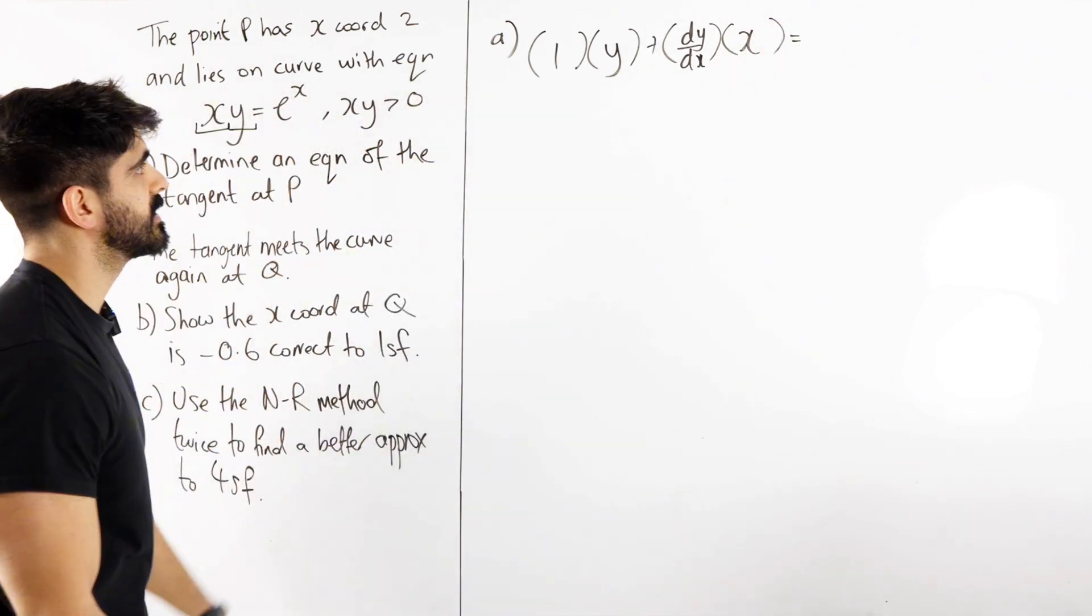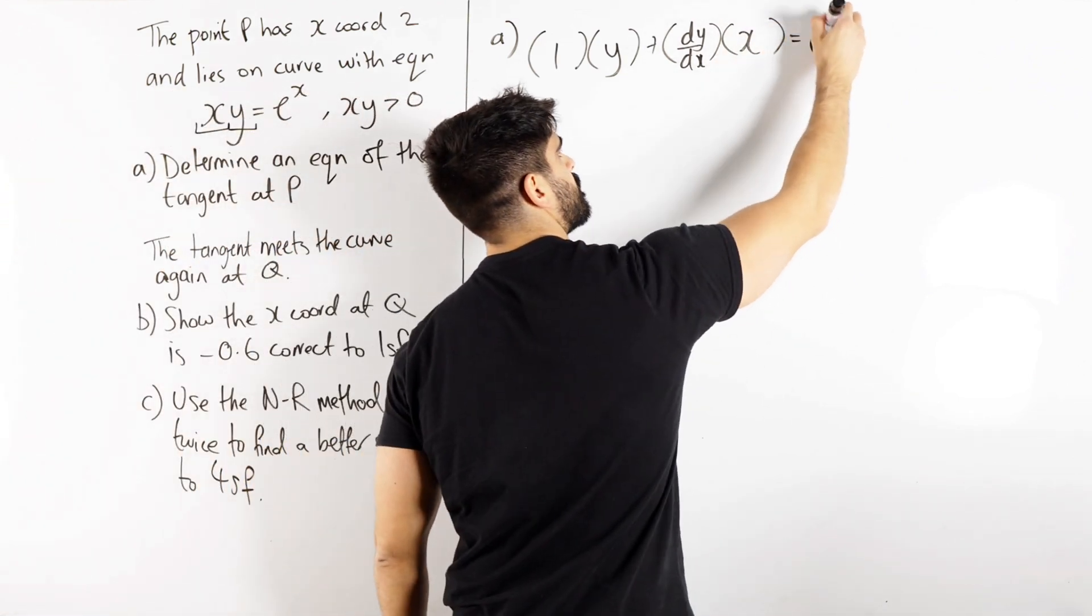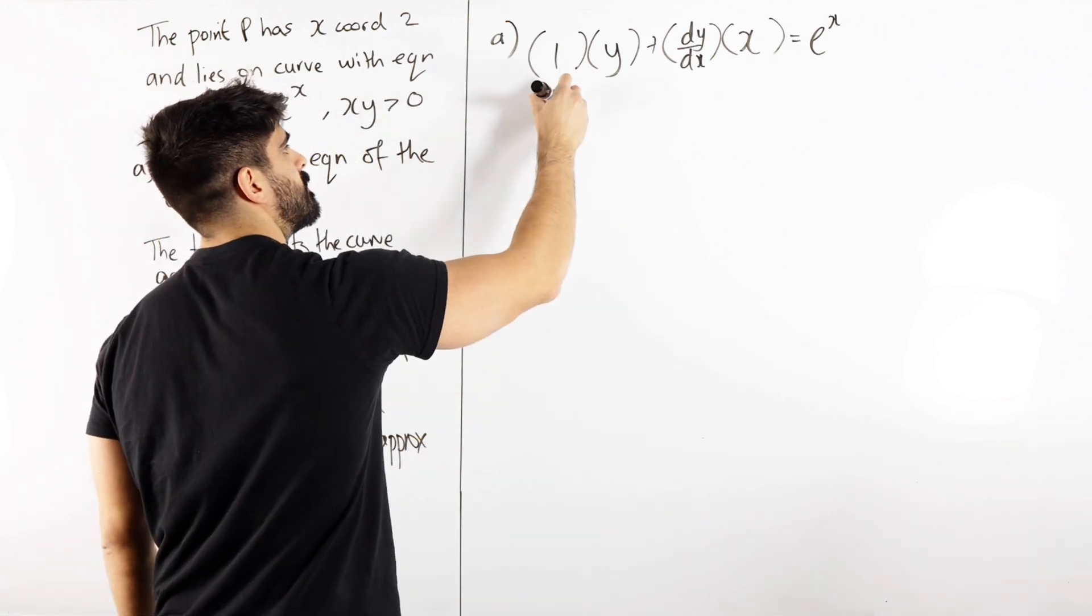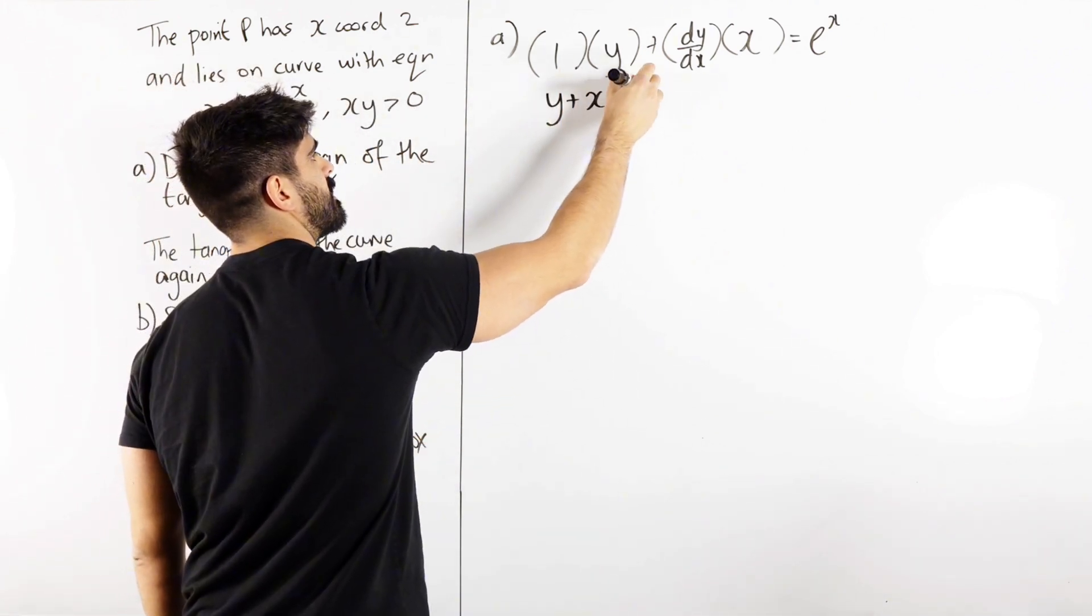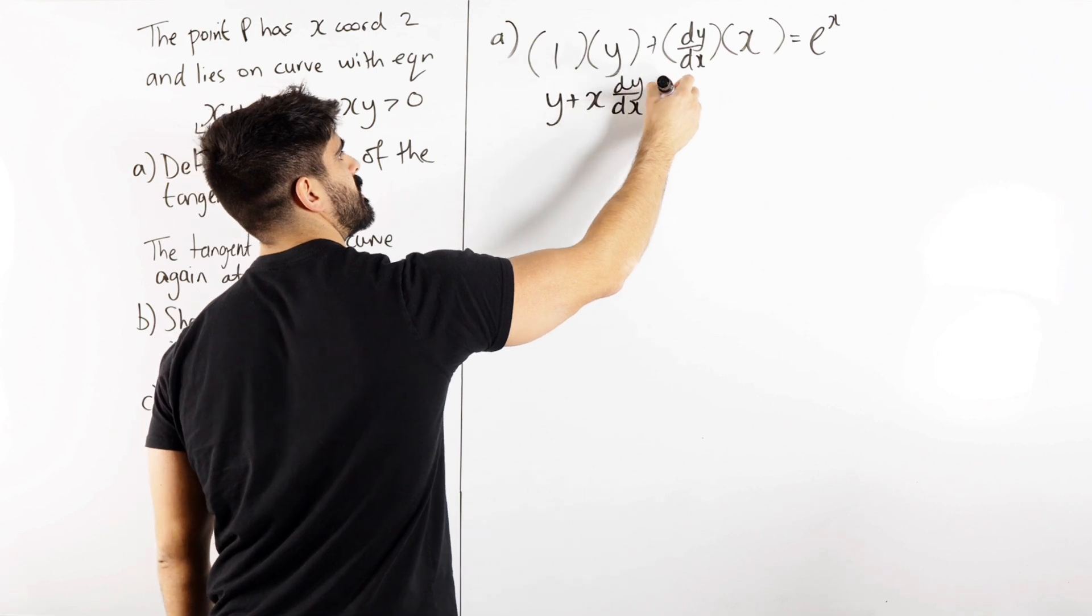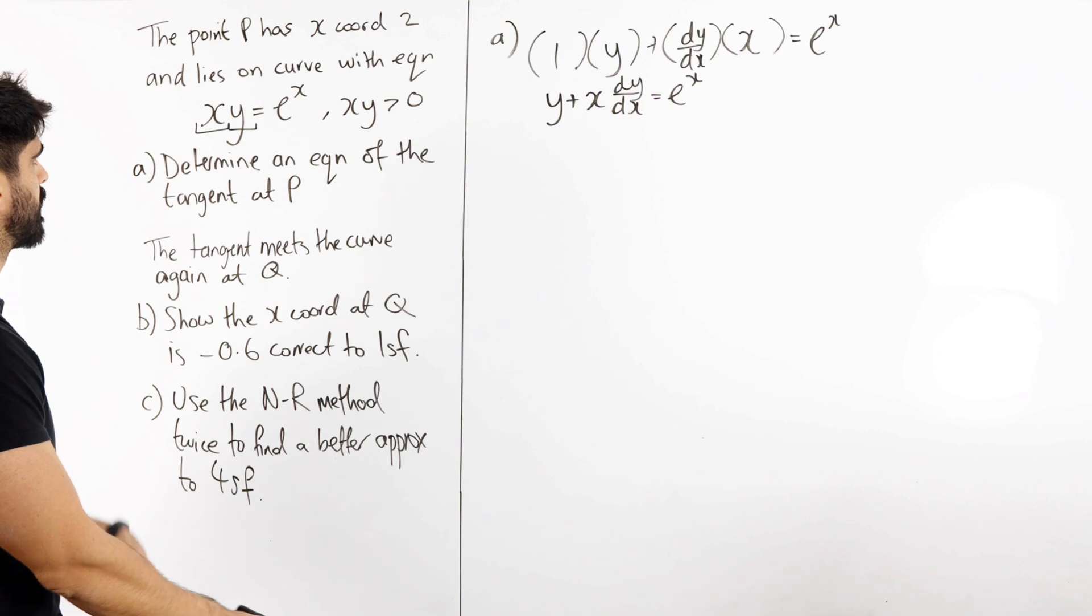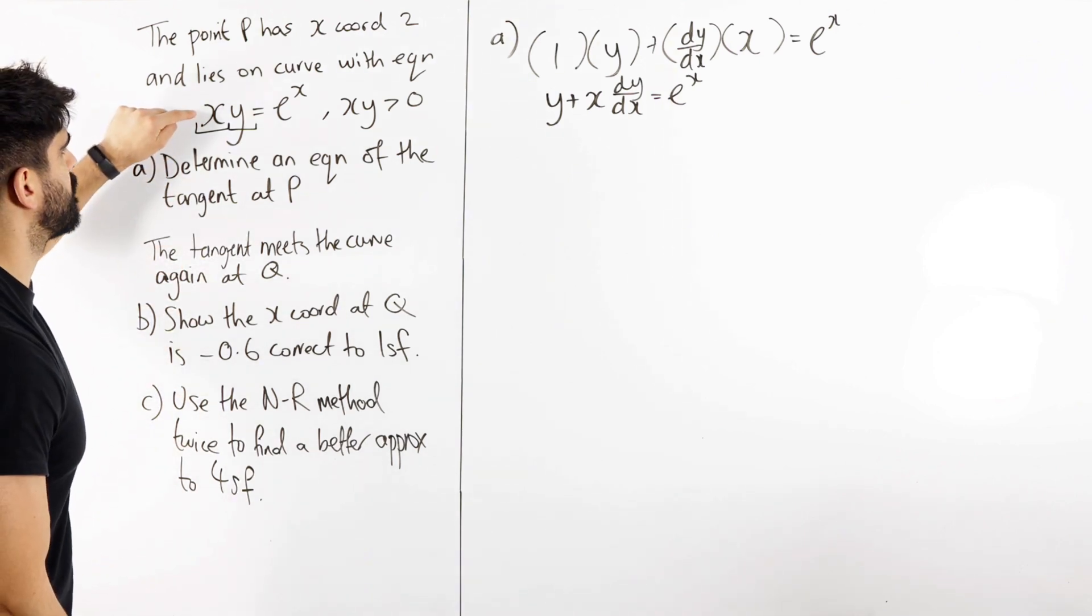This equals the differential of e to the x which is just e to the x. So we have y plus x dy/dx equals e to the x. Now we just need to sub in our x value of 2, but we also need the y value. So how are we going to get the y value from here? We're just going to sub in x is 2.